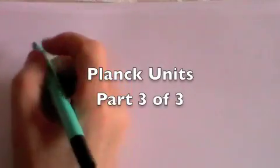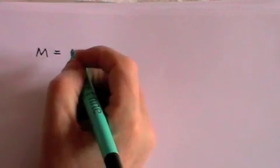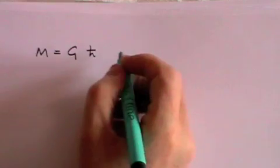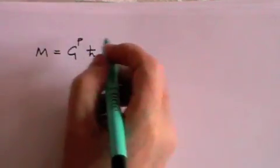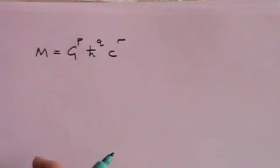The third term we have to determine is mass. Once again we want to determine that from the fundamental constants G, H-bar and C. Once again we're going to give them P, Q and R powers. And what we need to know is what are the values for P, Q and R.